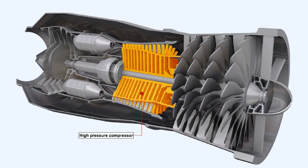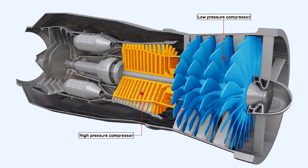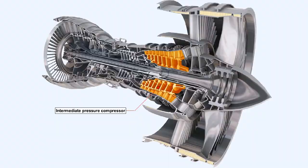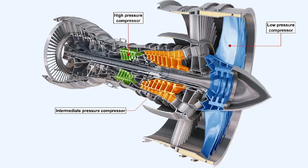To overcome the tendency of early axial flow engines to stall at low RPM, designers split the compressor initially into two separate sections called, respectively, the high pressure or HP compressor, and the low pressure or LP compressor. Subsequently, in later more powerful engines, designers split the compressor into three sections by adding an intermediate pressure or IP compressor. Each compressor section is driven through a shaft by its own turbine. At any given power setting, the speed of rotation of the compressors increases in proportion to its pressure status — the intermediate pressure compressor rotates faster than the low pressure compressor, and the high pressure compressor rotates faster than the intermediate pressure compressor.